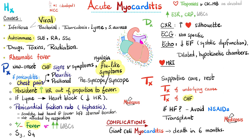It's an -itis, so ESR and CRP are elevated. Chest X-ray will show an enlarged cardiac silhouette. EKG: nonspecific findings. Echo: systolic dysfunction, low ejection fraction, dilated hypokinetic chambers, which reminds me of dilated cardiomyopathy. Cardiac MRI can also help diagnose this disease. Treatment is supportive care: rest and decreased activity, treatment of the underlying cause, and treatment of the congestive heart failure. If the patient has heart failure, avoid NSAIDs. If not responding to therapy and the patient is young with a donor available, heart transplant. Most patients should be fine; however, in cases of giant cell myocarditis, death can happen within 6 months.